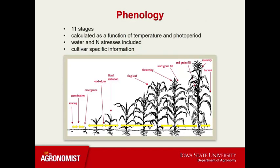Next is leaf development, which is directly related to biomass production, and then biomass partitioning. In the maize model, phenology is divided into 11 stages, as depicted here in this figure, beginning with planting to harvest. The duration of each stage is calculated as a function of temperature and photoperiod, and also impacted by stresses such as water and nitrogen. In addition, the duration can also be a cultivar- or hybrid-specific coefficient.